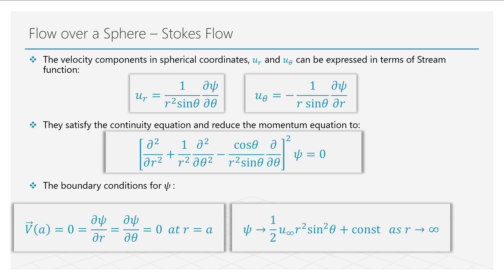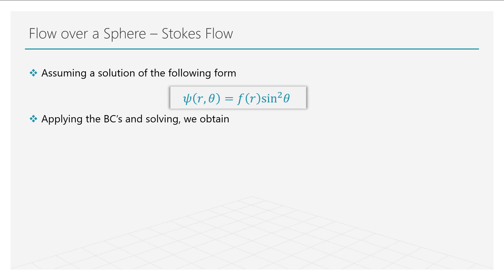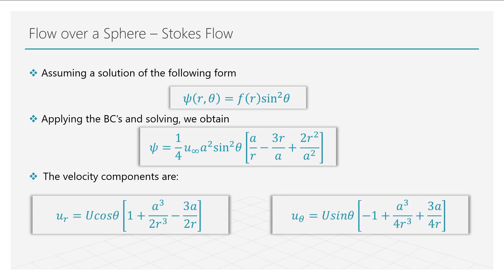In order to solve for the stream function, let us now assume a solution of this form. Solving for the stream function and applying the boundary condition, we obtain an analytical solution for the stream function. The velocity components are written as shown here.